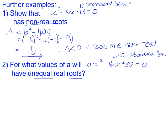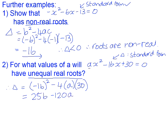So b is -16, a is a, we don't know what the value of a is, and c is 30. If we simplify that, (-16)² is 256, and 4 times 30 is 120, so it will be 256 minus 120a.